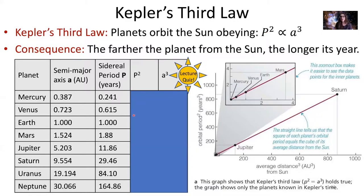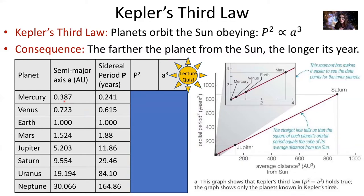We can test Kepler's third law using data, just like Kepler did. Here we have the planets in our solar system with their semi-major axis listed in astronomical units and their orbital period in Earth years. To check whether Kepler's third law holds, you take the square of the orbital period and the cube of the semi-major axis for each planet, and see if they equal each other. If P squared is very close to A cubed, then the planet obeys Kepler's third law — and all planets should be pretty close to obeying it.